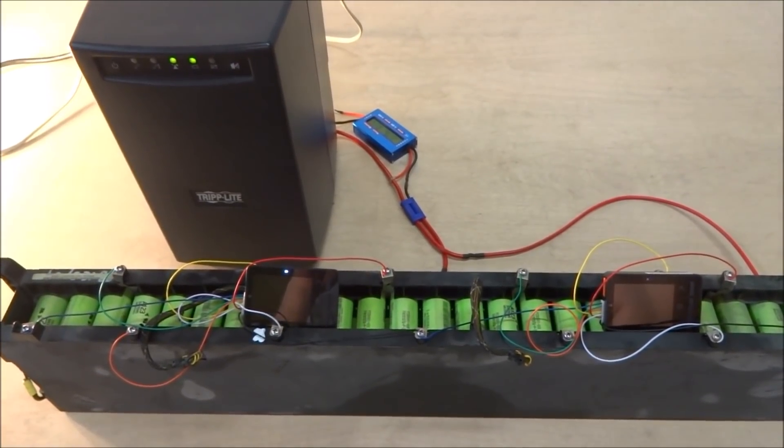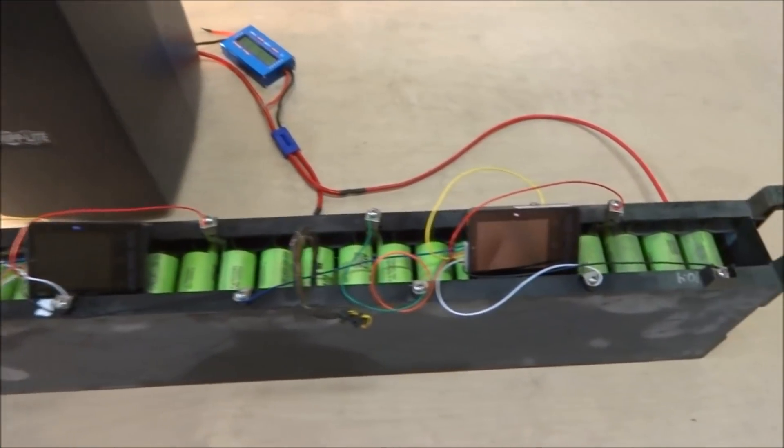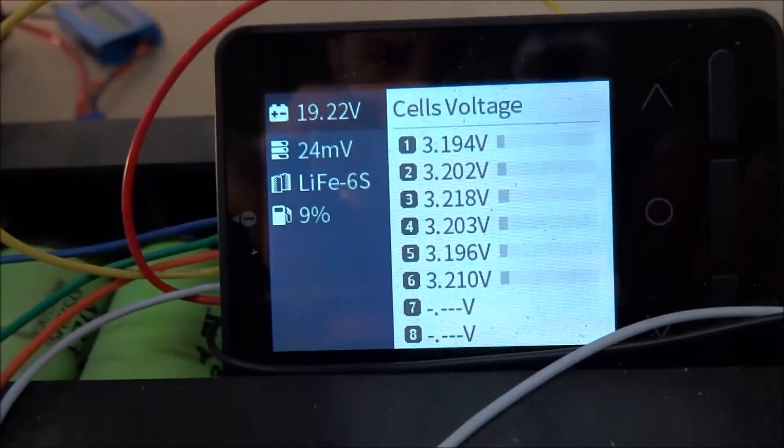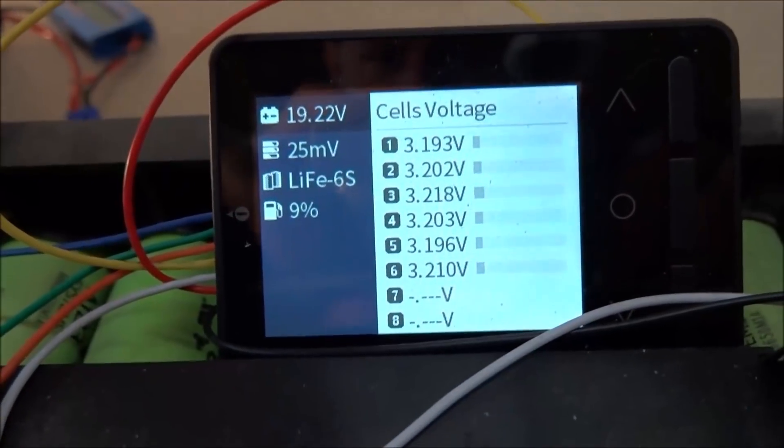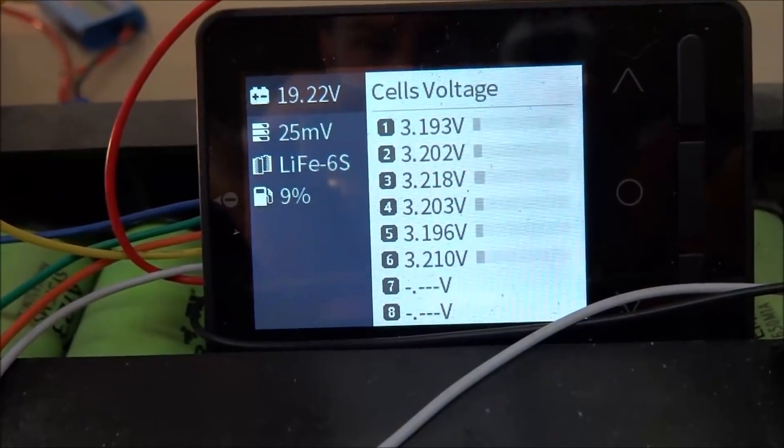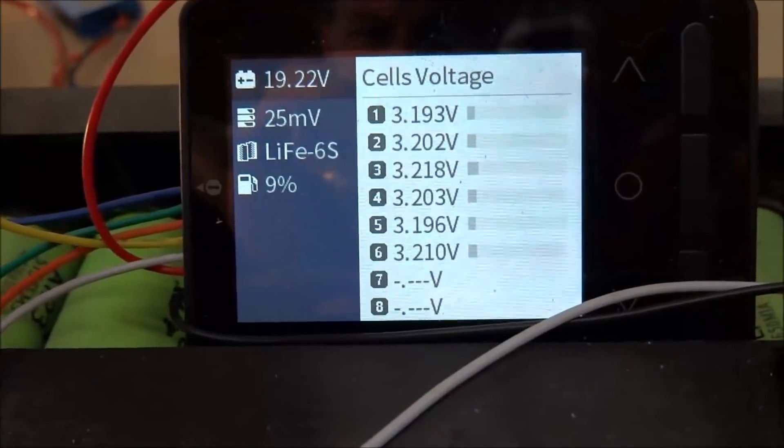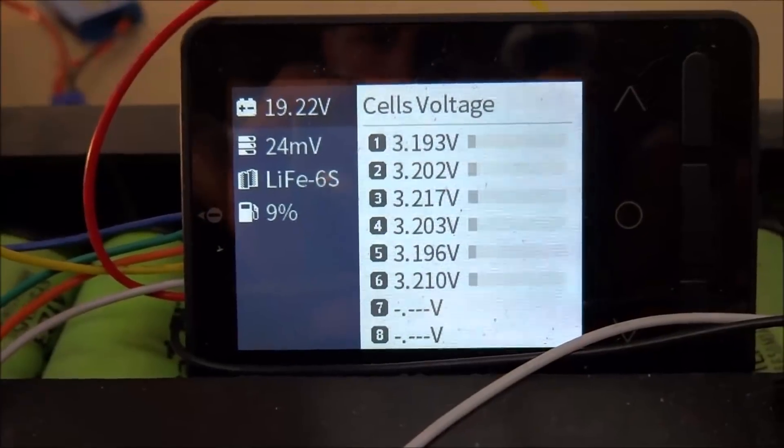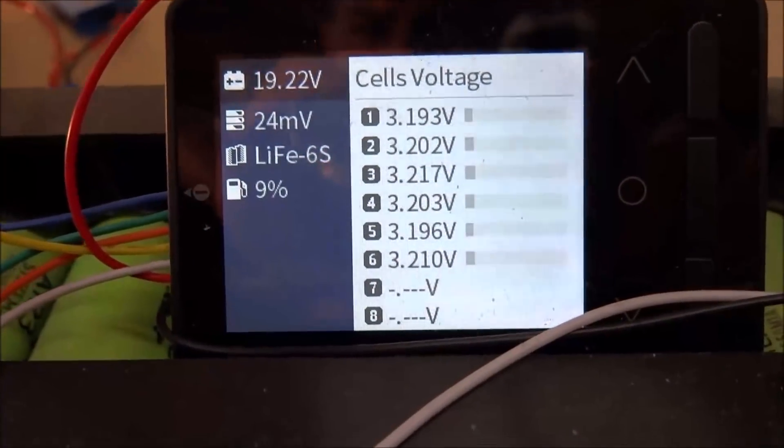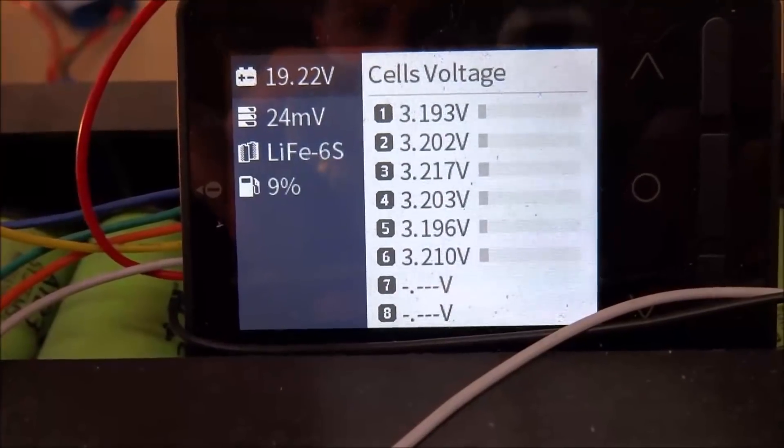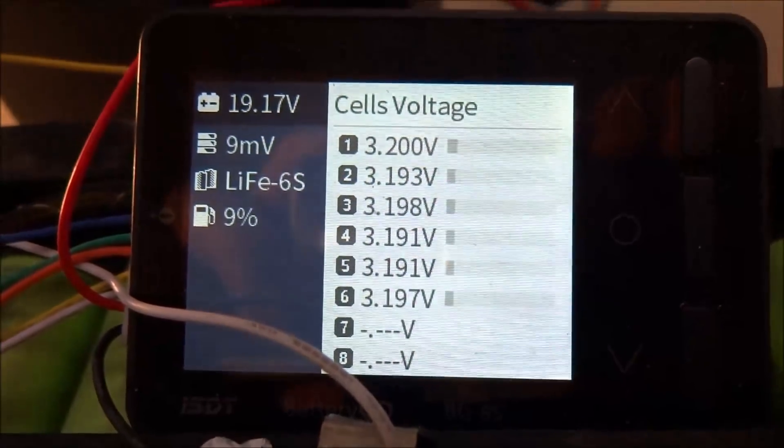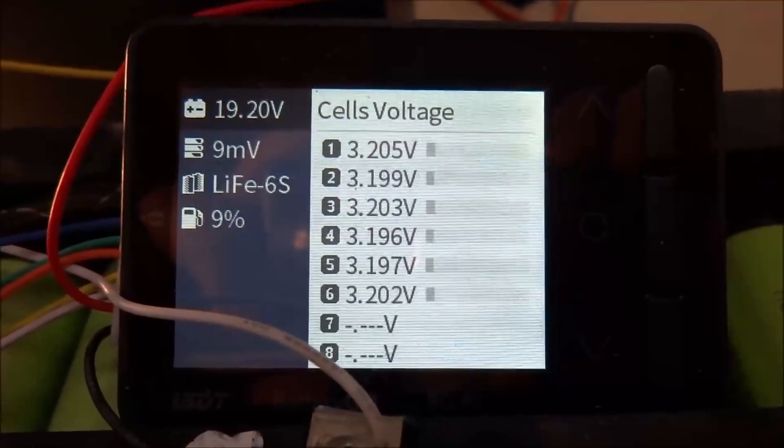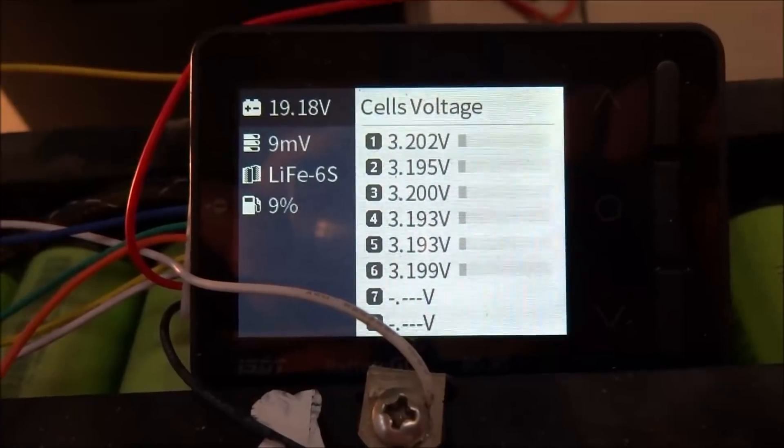The UPS has now been running for about half an hour, so let's see the state of voltage. As you can see, it's indicating 9% state of charge, however that's not accurate when it's on a load. The variance has been reduced now to only 24 millivolts, and on this one that's even better. I only have 9 millivolts difference.